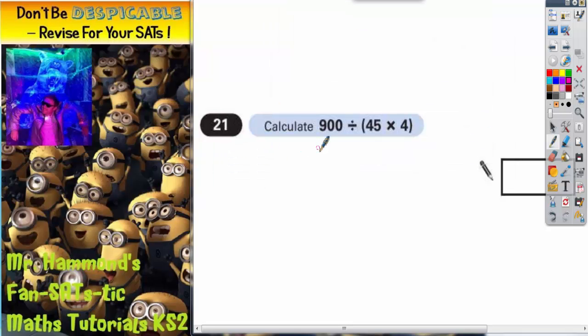Question 21. Calculate 900 divided by 45 times 4.